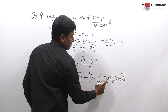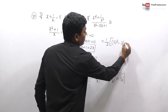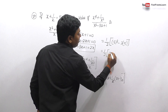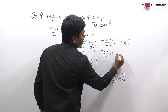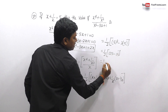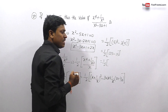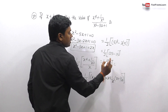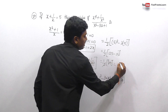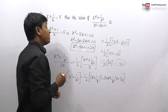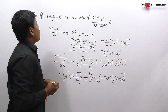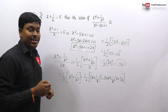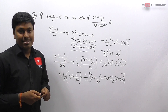5 cubed is 125 and 3 × 5 = 15, so 125 - 15 = 110. Multiplying by 1/2 gives 110/2 = 55. The answer for question 26 is 55. That completes set number 6.